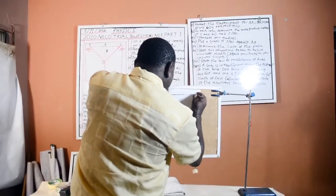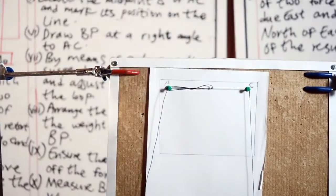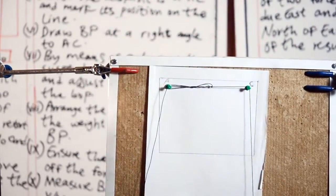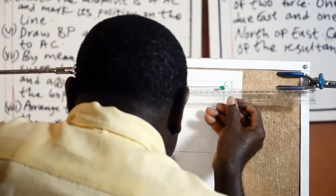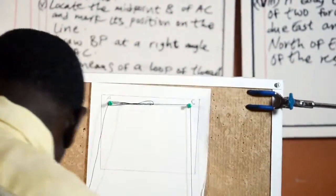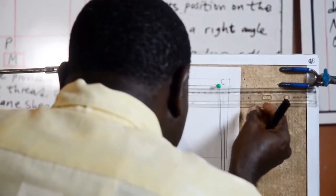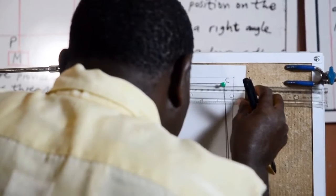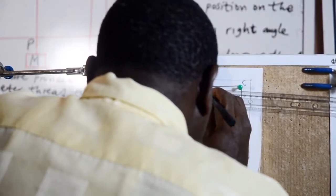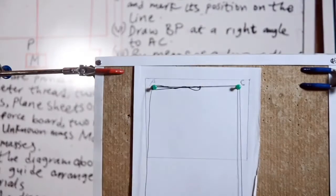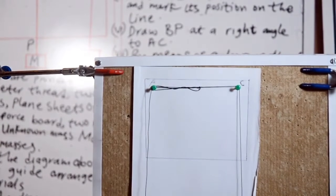This is C. Locate the midpoint of AC. Locate the midpoint B of AC. Mark its position. Now the length of AB is 14 so the midpoint will be 7cm, that is the midpoint. Now draw BP at right angle to AC.